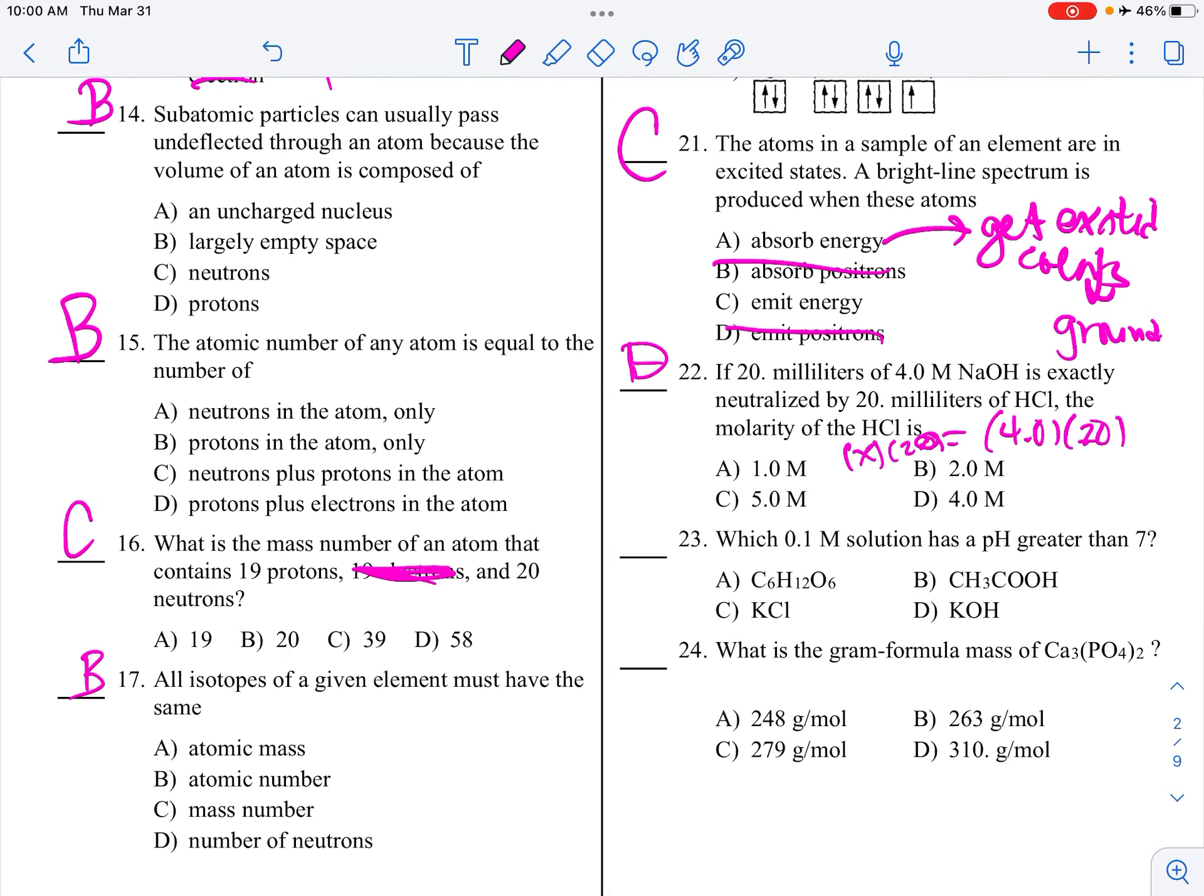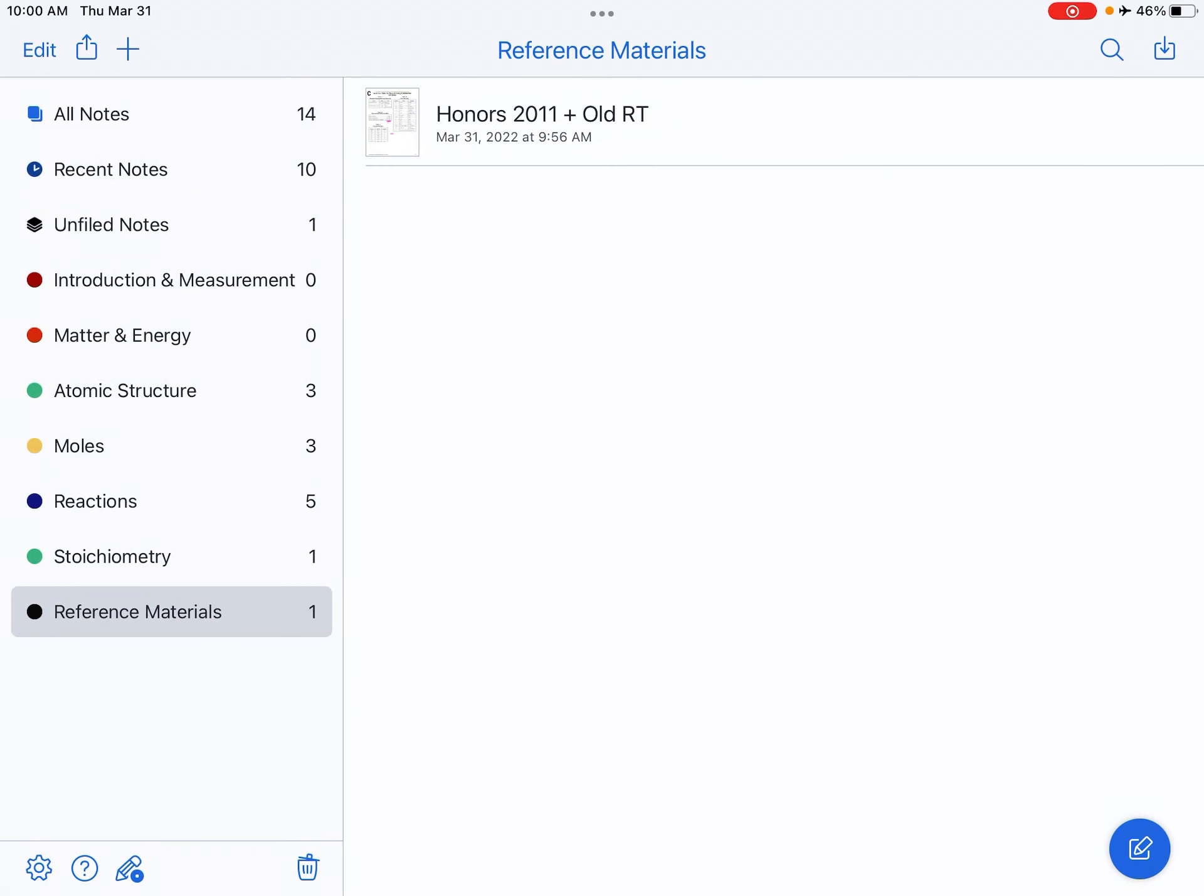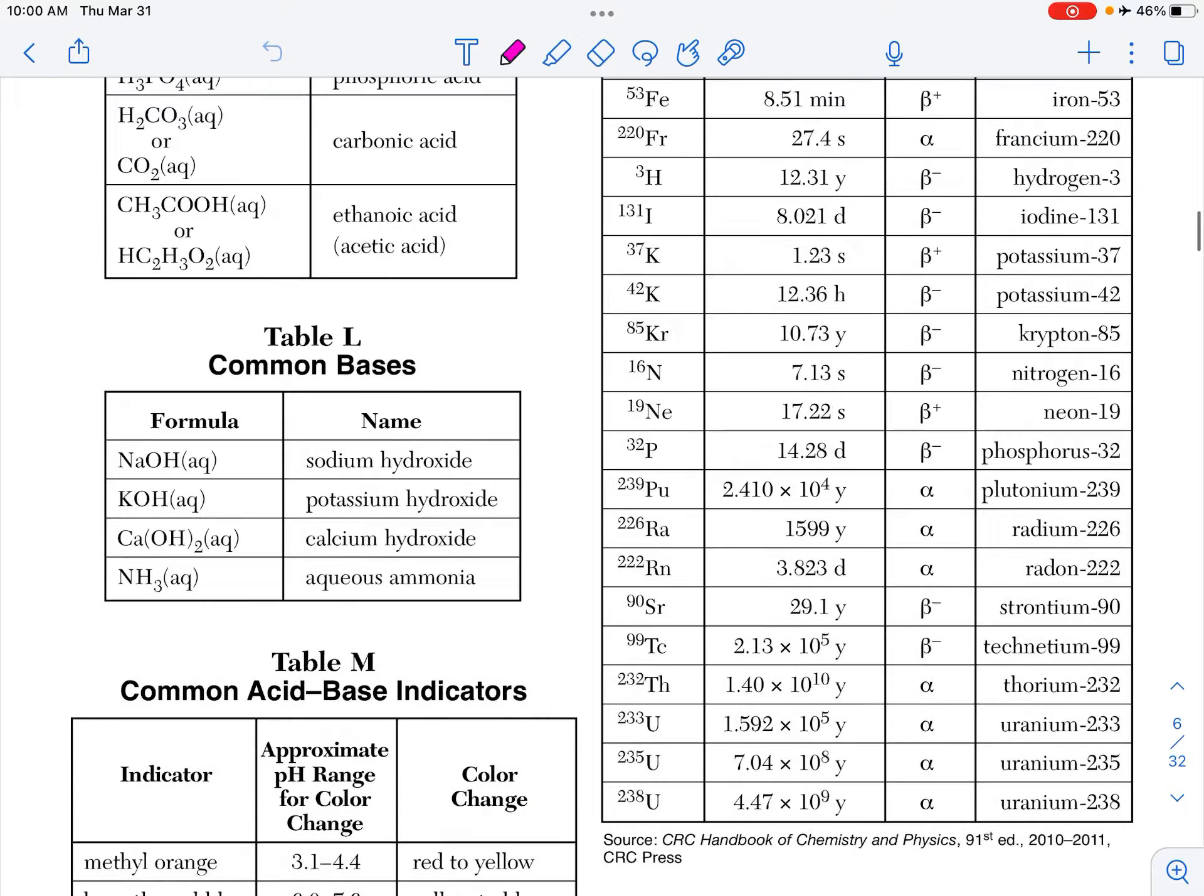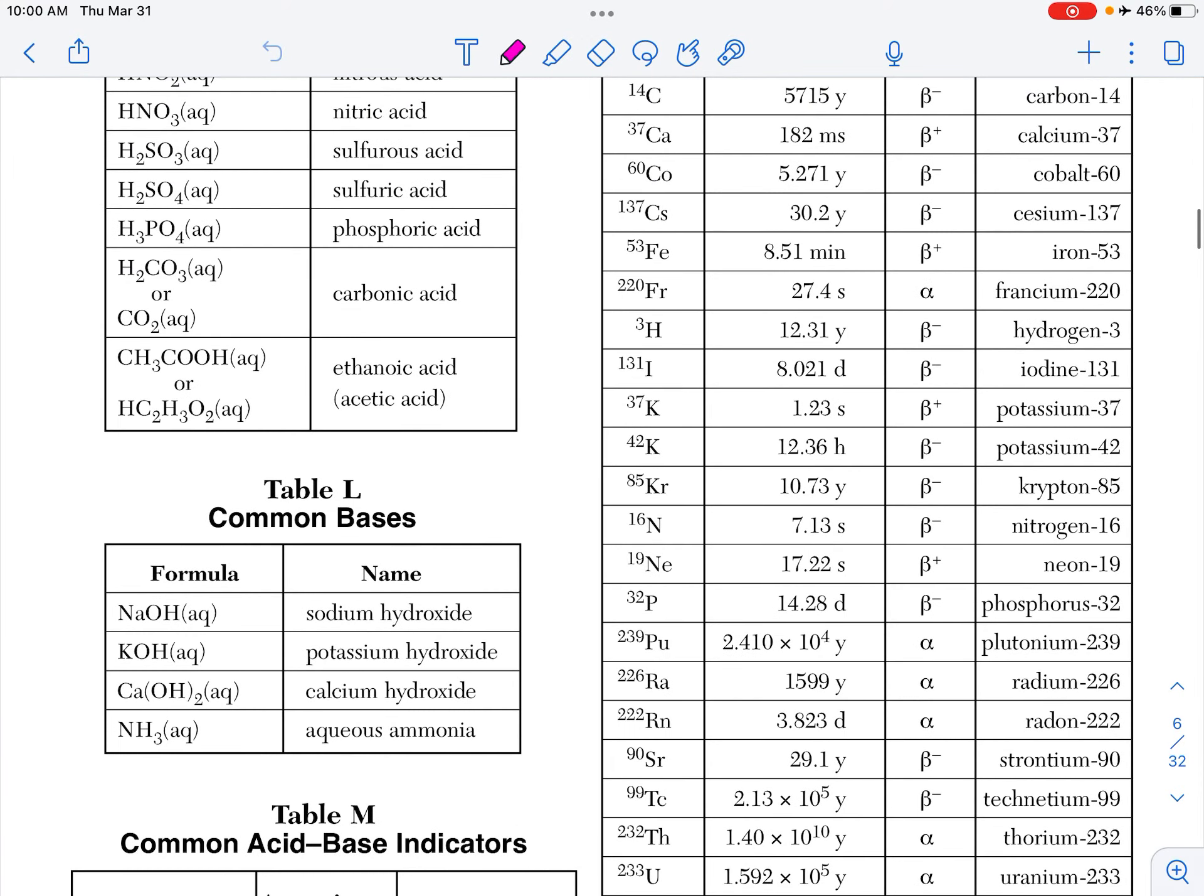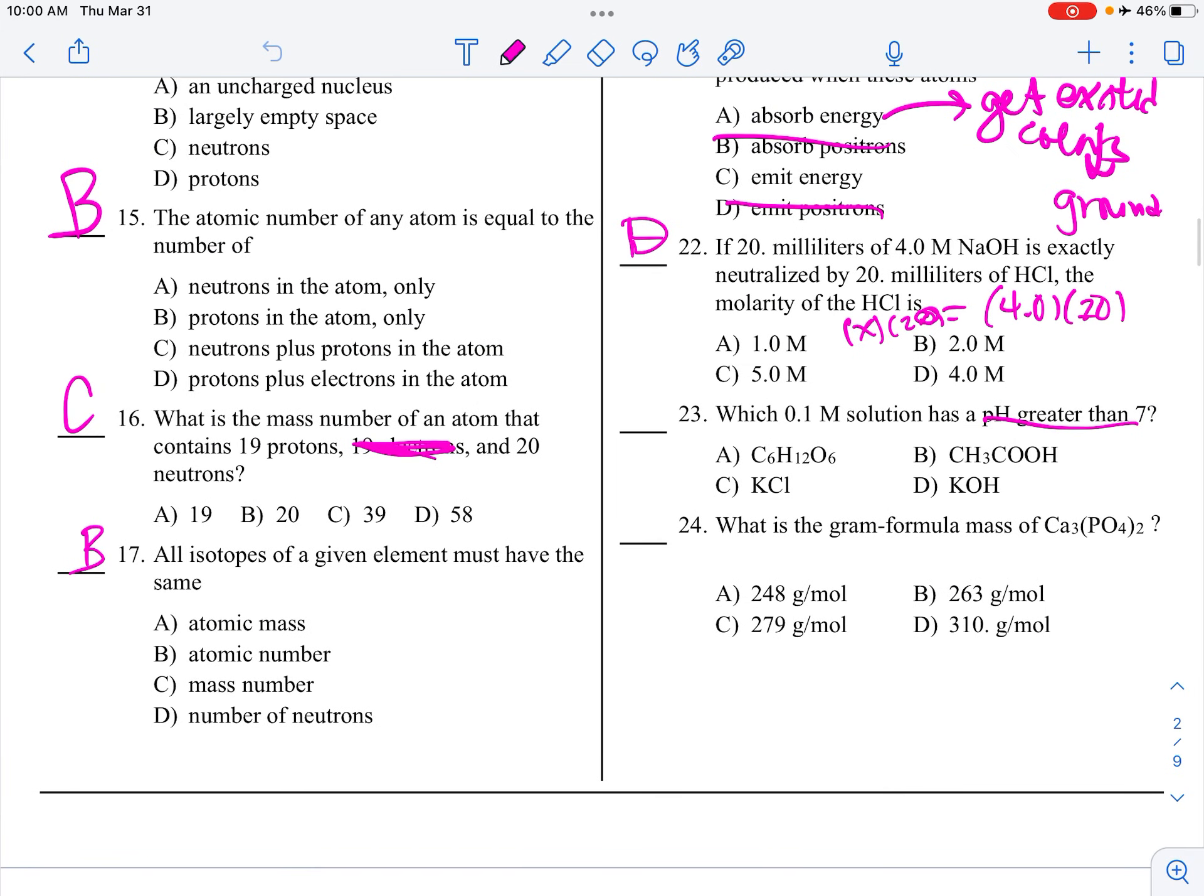Which one molar solution has a pH greater than 7? So, you're looking for bases. So, back over here on the reference tables, bases are on table L. So, take a look for any of those here. So, if you're looking on table L, choice D is there. This is a covalent compound sugar. This is tricky. That is acetic acid. It's on table K. This is a salt.